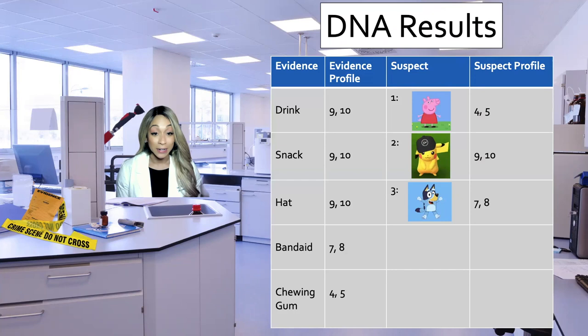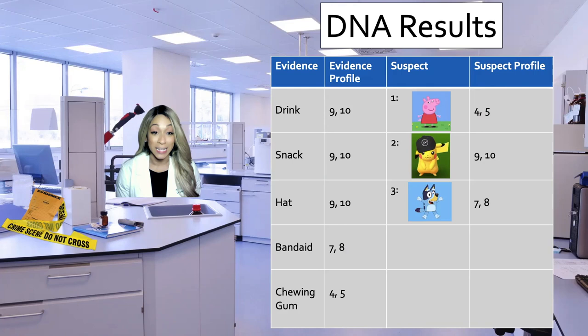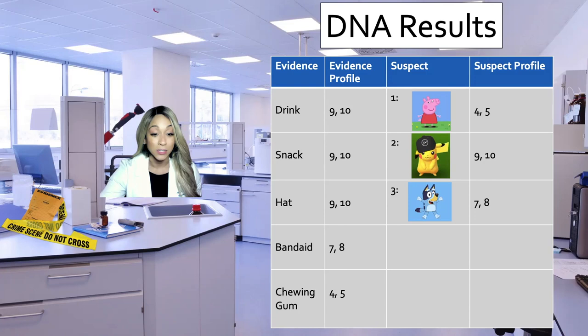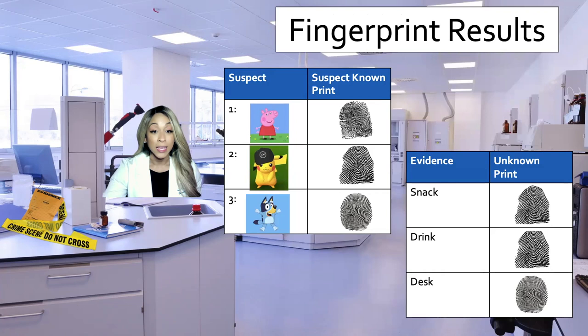This is a much more simplistic version of what a DNA profile actually looks like, but I remind them that half of our DNA comes from one parent and half from the other — that's why there are two numbers. So as we look, we can do this comparison and see that Peppa Pig is a 4-5, so she matches the chewing gum found in the classroom. Pikachu was a 9-10, so he matches the drink, the snack, and the hat. And Bluey is a 7-8, so she matches the Band-Aid. Then we take a look at the fingerprint results, comparing the known fingerprints of our suspects to the unknown prints found on the evidence. The snack and drink fingerprints match Pikachu, and the desk fingerprint matches Bluey.